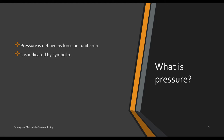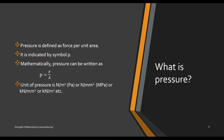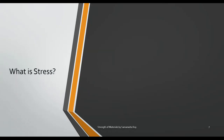Pressure is defined as force per unit area, indicated by the symbol small p. Mathematically, pressure equals force F divided by area A. Common units of pressure include newton per meter square (pascal), newton per mm square (megapascal), kilonewton per mm square, kilonewton per meter square, and bar.